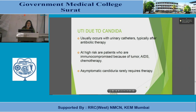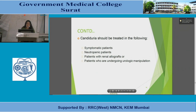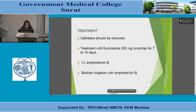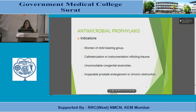Candidal UTI usually occurs with urinary catheters, typically after antibiotic therapy, and is most common in immunocompromised patients (tumor, AIDS, chemotherapy). Asymptomatic candiduria rarely requires therapy. Treatment is required in symptomatic patients, neutropenic patients, renal allograft recipients, and patients undergoing urological manipulation. Treatment: remove catheter, fluconazole 200 mg once daily for 7–14 days, IV amphotericin B, and bladder irrigation with amphotericin B.